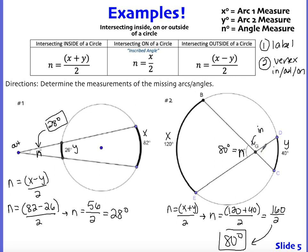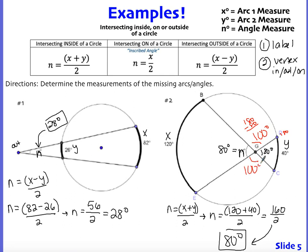And if you remember from last week, it's also the measurement of the vertical angle. If you also needed to know the measurement of the supplementary angle, these are supplementary because they both add up to 180 degrees since they're on a straight line. So it would be 180 minus 80, which gives you 100 degrees. And so the vertical supplementary angle would also be 100 degrees.